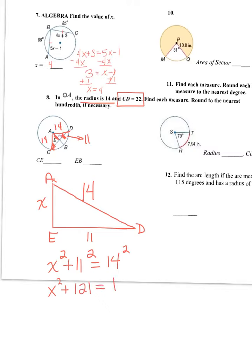11 squared is 121. 14 squared is 196. We subtract 121. And it's going to be x squared equals 75. But then to get rid of the square, you get the square root of both sides. And when you put that in the calculator, that's going to give an approximate answer of, let's see, hold on.